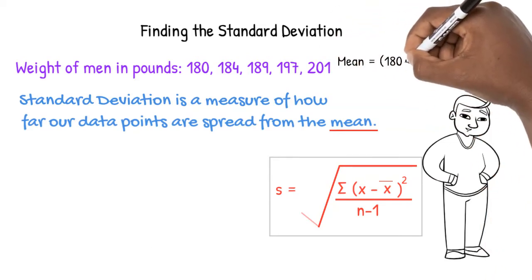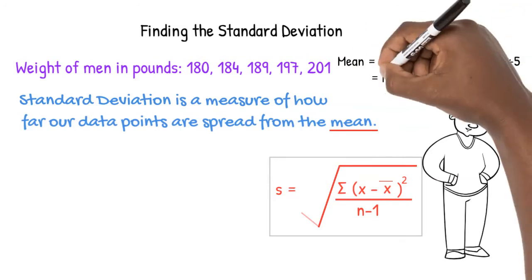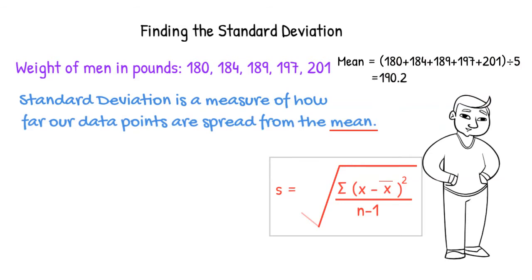Recall that mean is calculated by finding the sum of the numbers and dividing by the number of numbers. The mean here is 190.2 pounds.